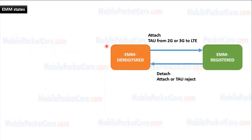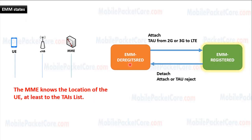First, let's discuss EMM states. The EMM state of every UE can be one of two states: EMM registered and EMM deregistered. In EMM registered state, the UE is attached to the network and the MME knows about the location of the UE — at least the MME knows the UE exists under which list of tracking areas.